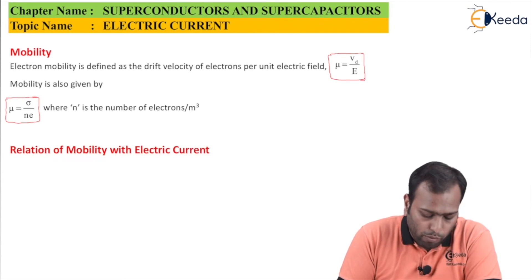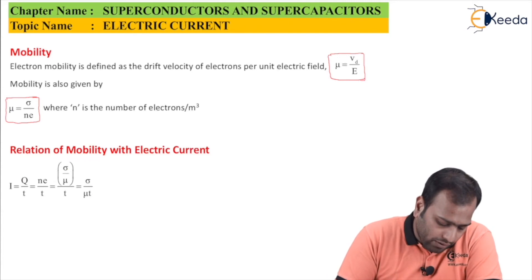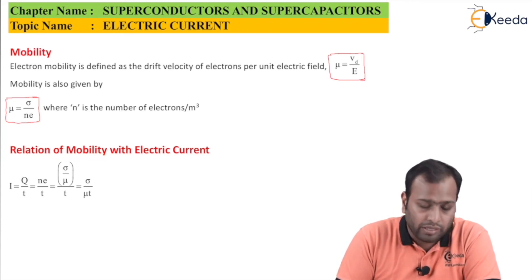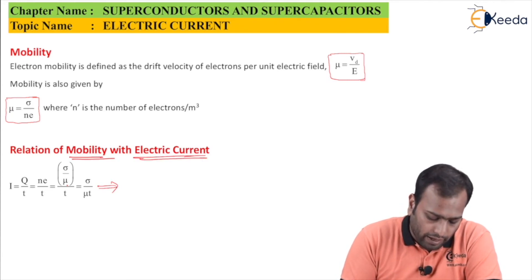Let's see what is the relation of mobility with the electric current. This is very simple. I equals Q by t, the rate of flow of charge with respect to time. It becomes n into E because there would be n electrons each having a charge E moving with time. n into E now becomes equals to sigma upon mu, and hence I equals sigma upon mu into T.